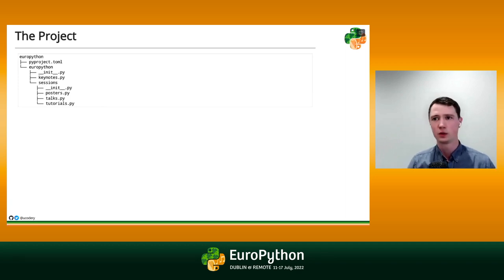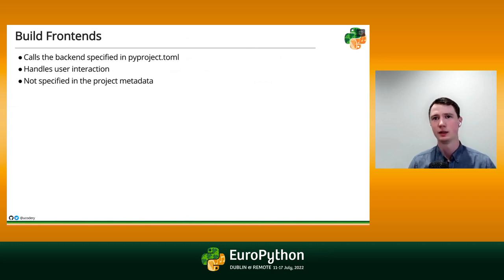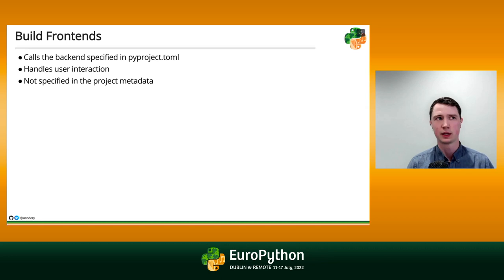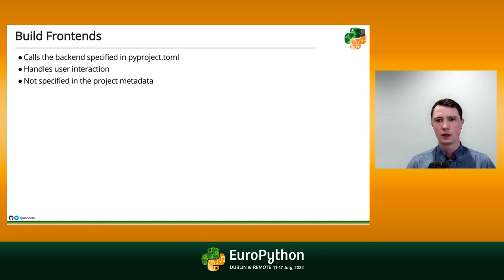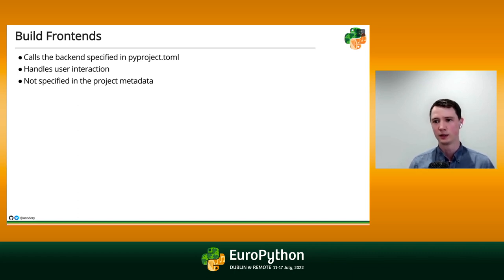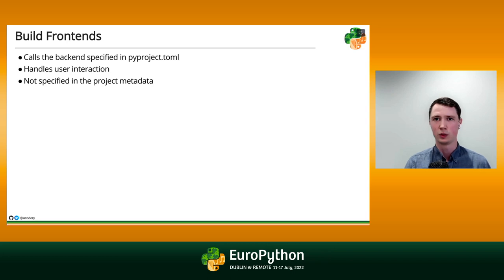We're going to look at a new category of tool called the build frontend. Build frontends are designed to call build backends, and they do this through an API that's been standardized so that any build frontend can work with any build backend. We're going to choose a build frontend and install it, but we're not going to record our choice anywhere in the project — not in pyproject.toml or any other metadata file. The choice of a build frontend is much more personal than the choice of a build backend.